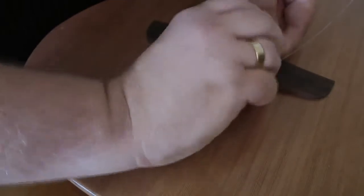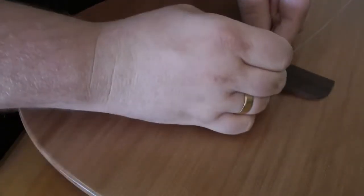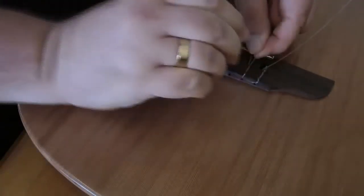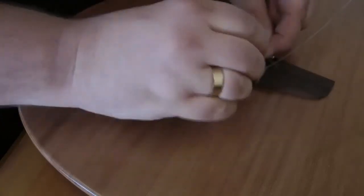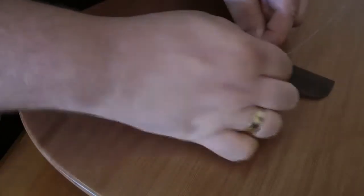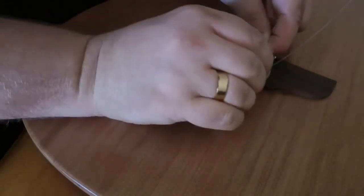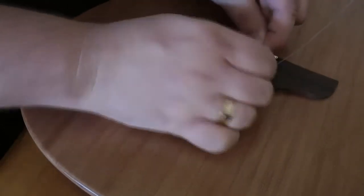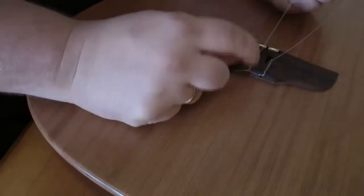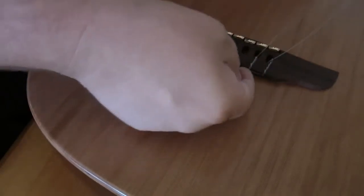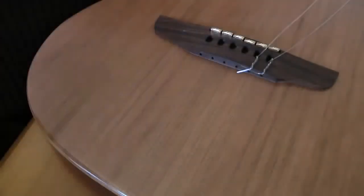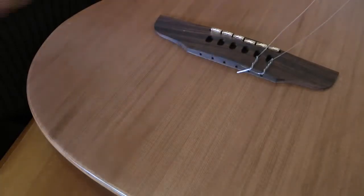Now moving on to the nylon B string. What I'm doing here is making sure that the excess string from the E string will be tucked into the loop of the B string. I tend to repeat this across the whole bridge so that all the strings are tucked in nicely into each loop. It's a nice aesthetic thing, it means you don't have any loose ends flapping around and makes things look nice and clean.